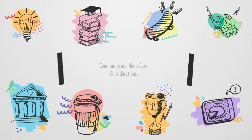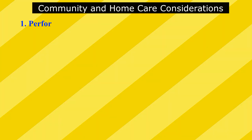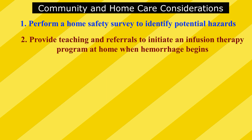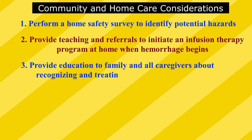Community and home care considerations include: performing a home safety survey to identify potential hazards; providing teaching and referrals to initiate an infusion therapy program at home when hemorrhage begins; and providing education to the family and all caregivers about recognizing and treating bleeds appropriately.